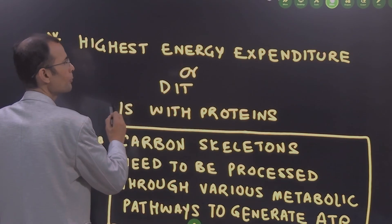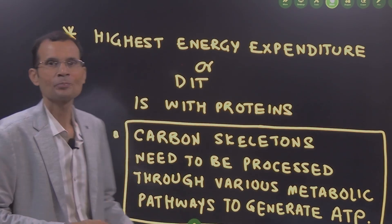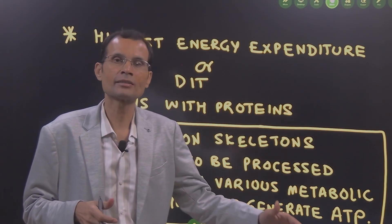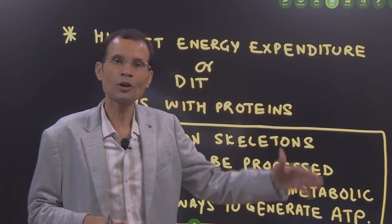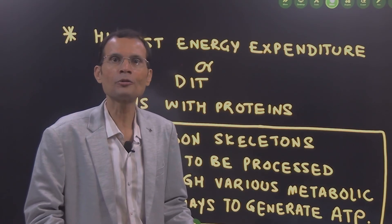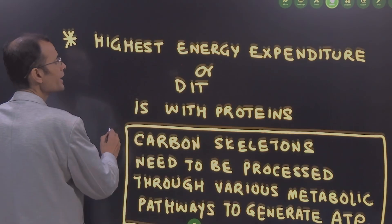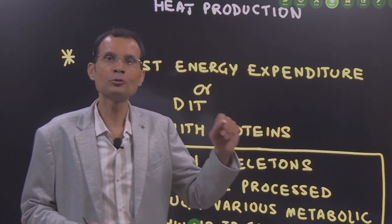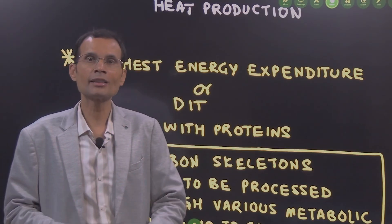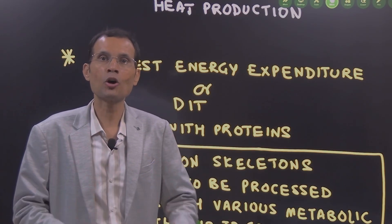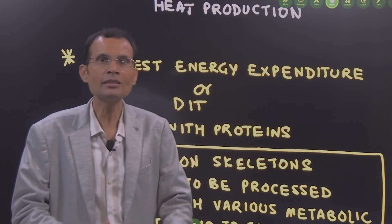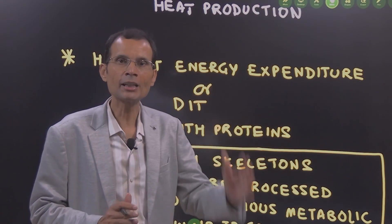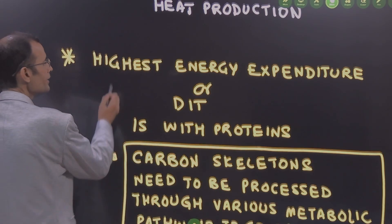Now the most important part of this answer is, look there are these nutrients, mainly carbohydrates, proteins and fats. Which one of them produces greatest amount of heat? The answer is proteins. So please remember specific dynamic action of the foodstuffs is sometimes also called as specific dynamic action of the proteins. Why? Because proteins are the nutrients which maximally cause the ATP breakdown and heat generation. Why is that?